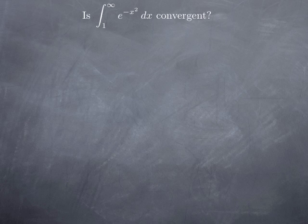Why this is exactly the case is beyond the scope of this course, but the point is we are not able to find an antiderivative of e to the negative x squared. We will see later in the course that we could represent such an antiderivative as the sum of a series, but that is for the later part of the course on power series.